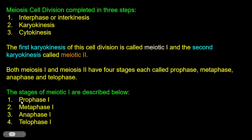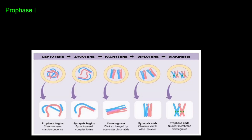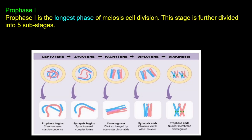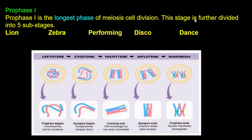Prophase first is the longest phase. This stage is further divided into five sub-stages. The mnemonic to remember the five sub-stages is: lion zebra performing disco dance.